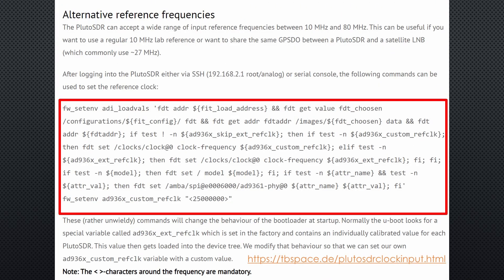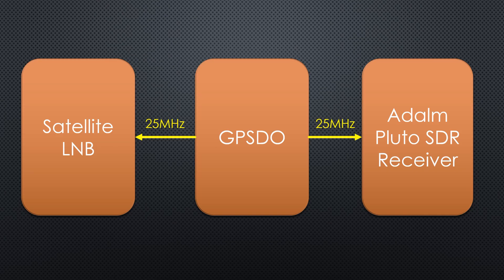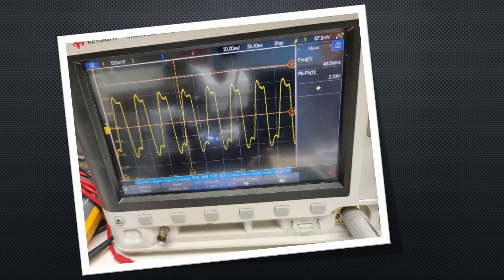I also found that we can change the reference frequency of the Pluto using this command. Just copy-paste. If I choose 25MHz, I can use a single frequency GPSDO in the future for the LNB and the SDR. The signal produced by the original oscillator in the Pluto is around 2.2V and we have to match it more or less using attenuators. And it is somehow square, so we do not need a filter for this path.